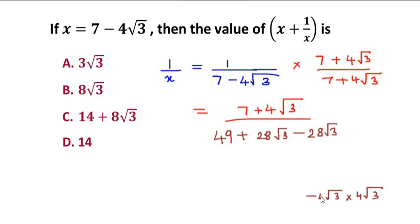The numbers get multiplied: 4 times 4 is 16, and radical 3 times radical 3 is 3 itself. And since there is a minus sign, minus with the plus becomes minus, so we get minus 16 times 3 is minus 48. So we get here the number as minus 48.